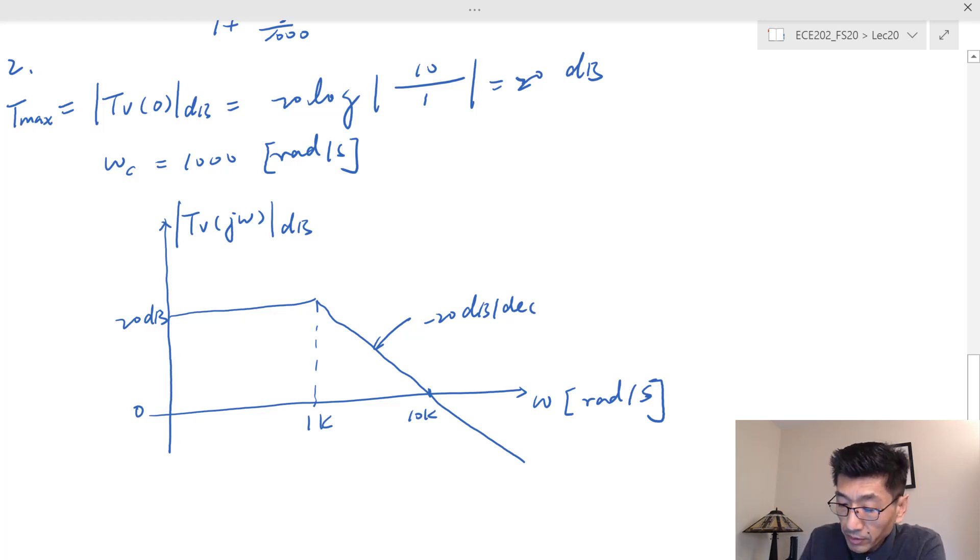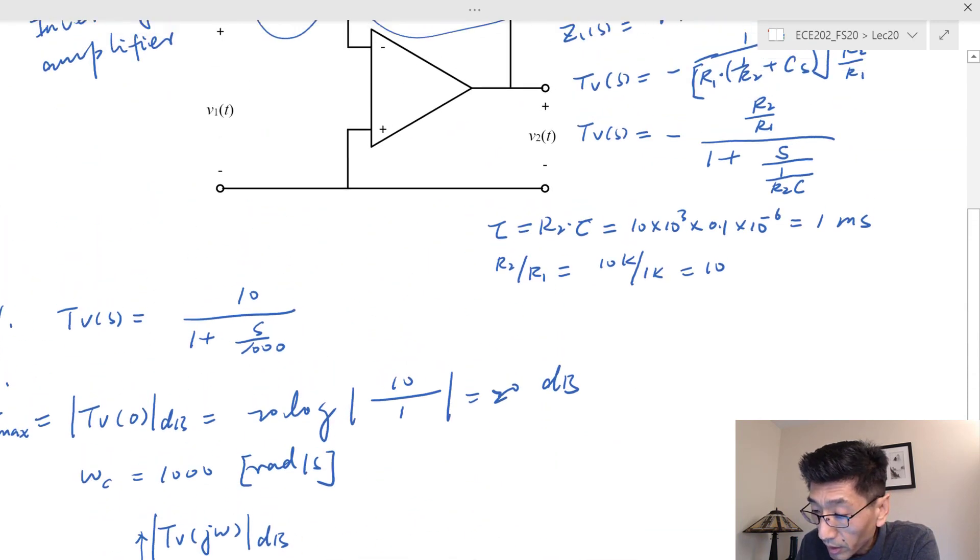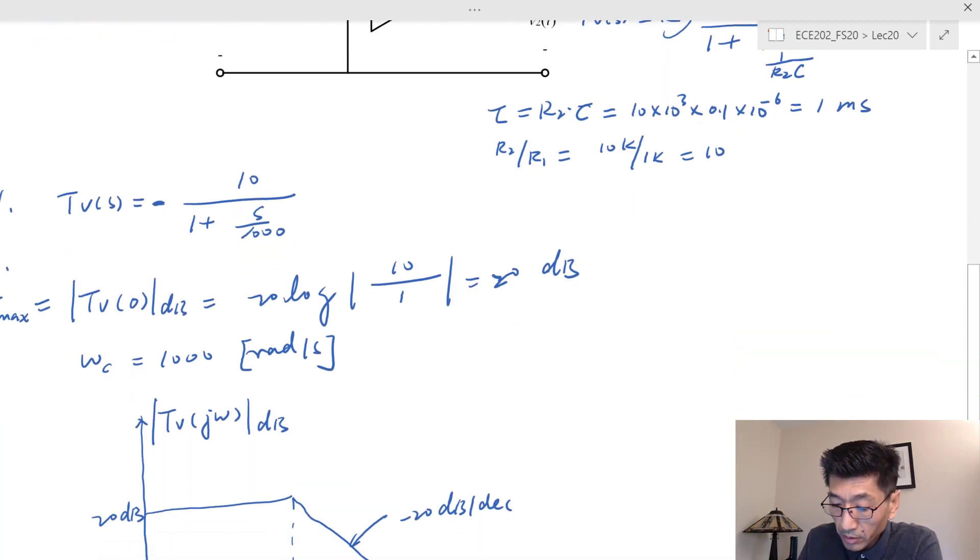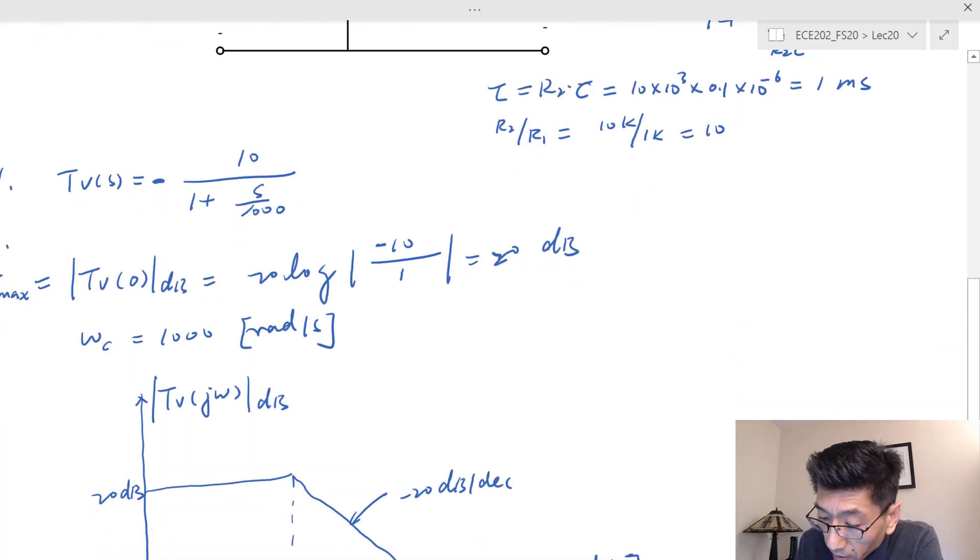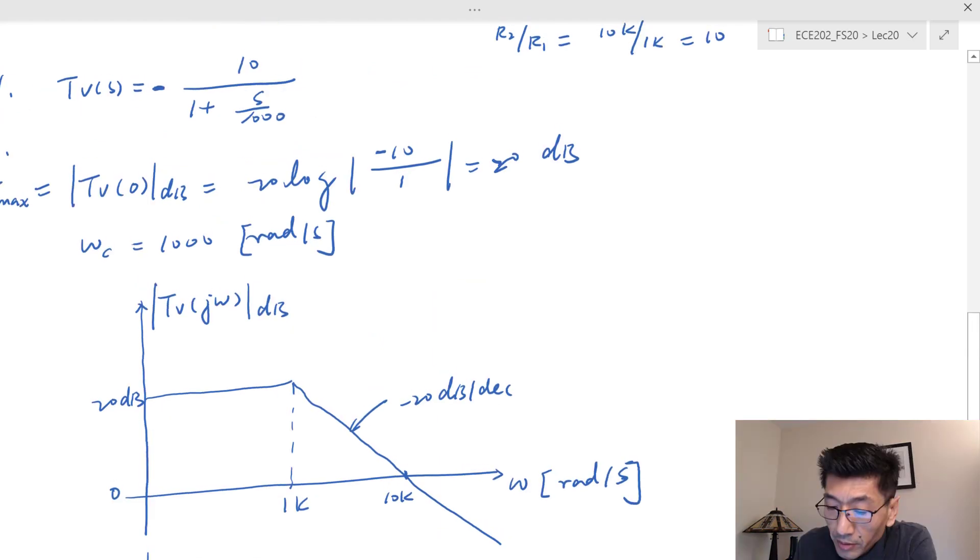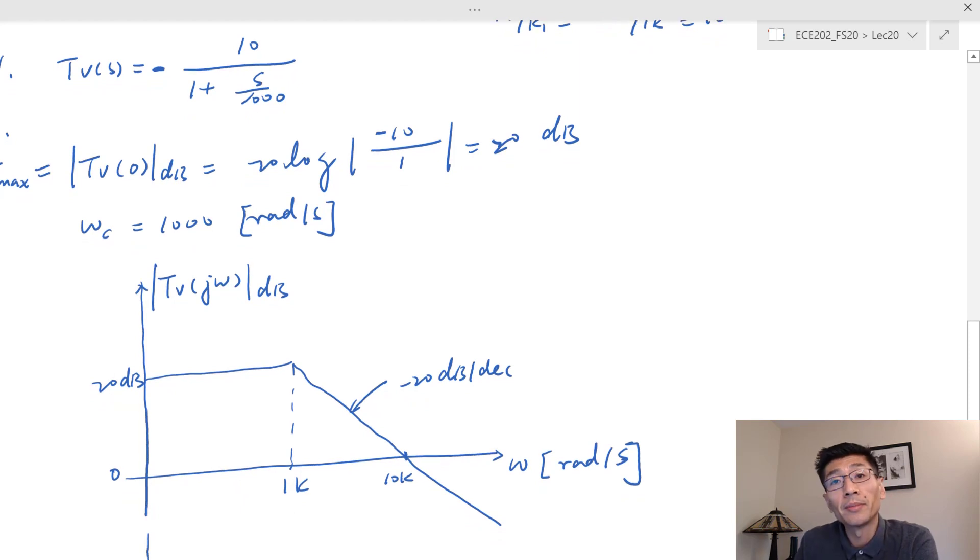For the phase, let me check—did I miss that negative sign there? Yes, I did. There should be a negative sign here. This doesn't really change things here, but it will change the phase. In this case, the phase angle at low frequency is negative 180 degrees.